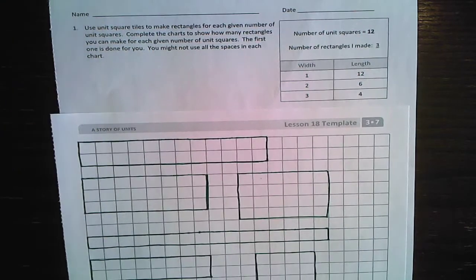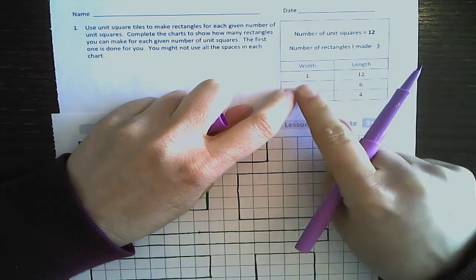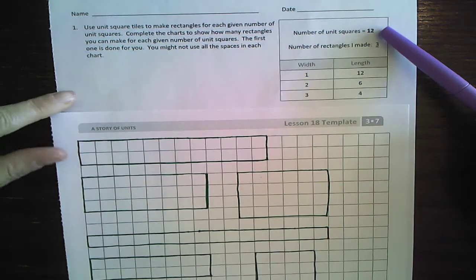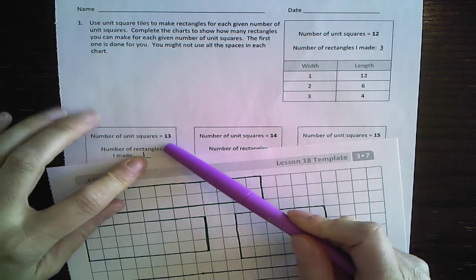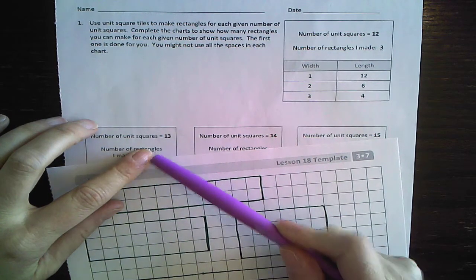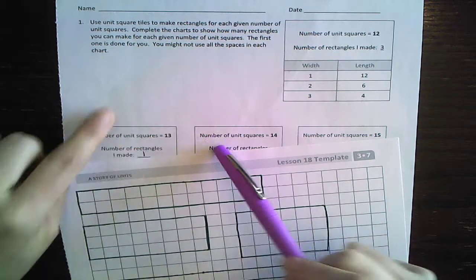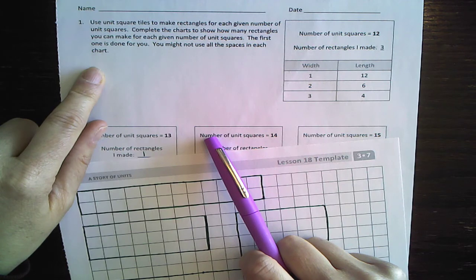Okay. So what I don't want to see, or what you don't need to do rather, is put 12 and then one or six and two, because that one's already taken care of. So you're going to think of fact families, right? You're going to think of what can I multiply to get 12? For this one, you're going to think, what can I multiply together to get 13? Okay. And like it says at the bottom, you may not use all the spaces in each chart.